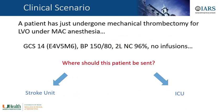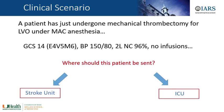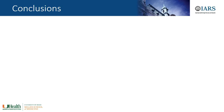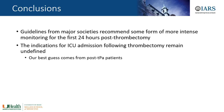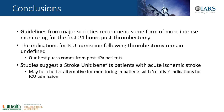Back to our clinical scenario: our patient just underwent mechanical thrombectomy under MAC and is overall pretty stable. Where should he be sent? It probably depends on your hospital system — there are no guidelines right now to tell us, but it will be either a stroke unit or the ICU, and maybe in the future more so a stroke unit. Conclusions: guidelines from major medical societies recommend some form of more intense monitoring for the first 24 hours post-thrombectomy; the indications for ICU admission following thrombectomy remain undefined but our best guess comes from tPA patients; and studies suggest a stroke unit benefits patients with acute ischemic stroke and may be a better alternative for monitoring in patients with relative indications for ICU admission.